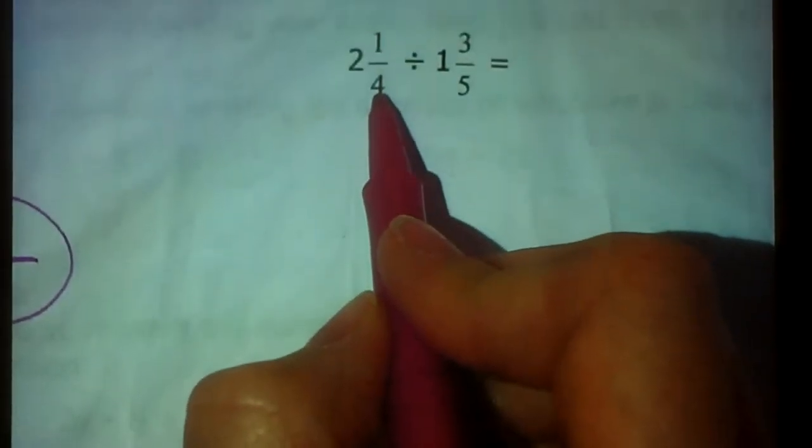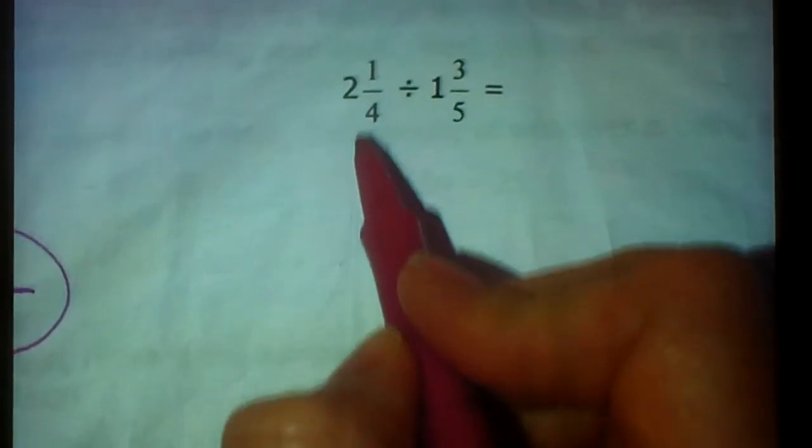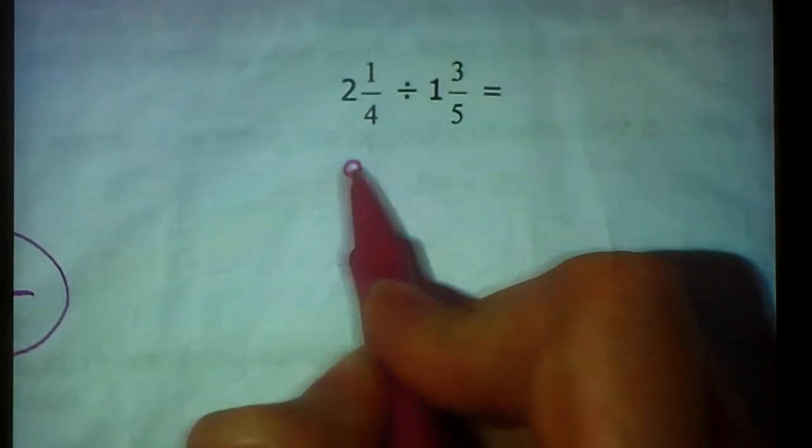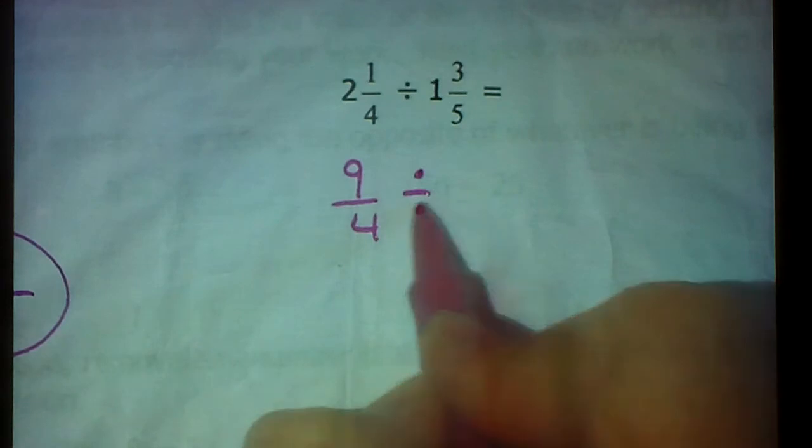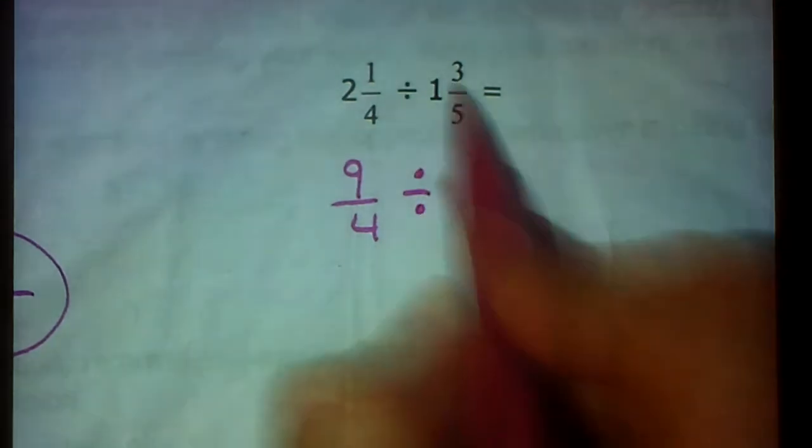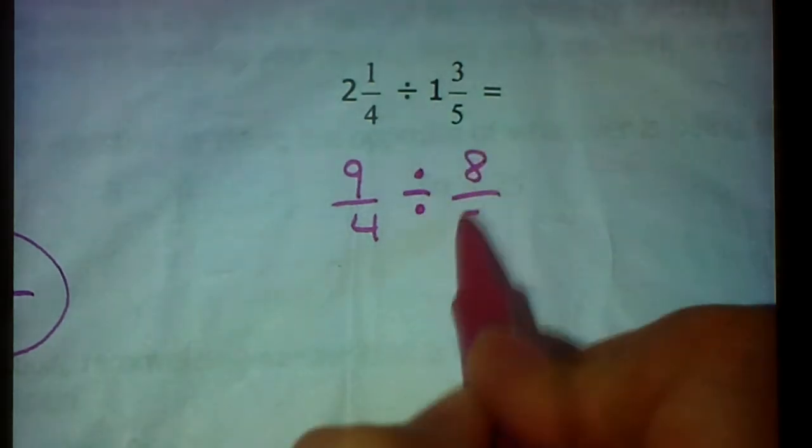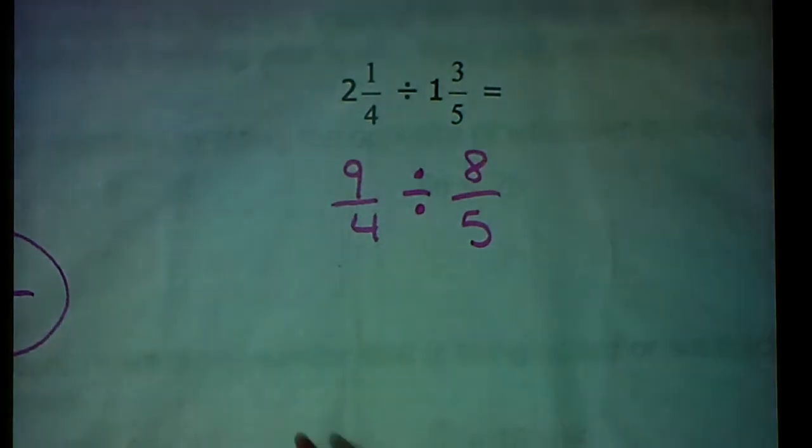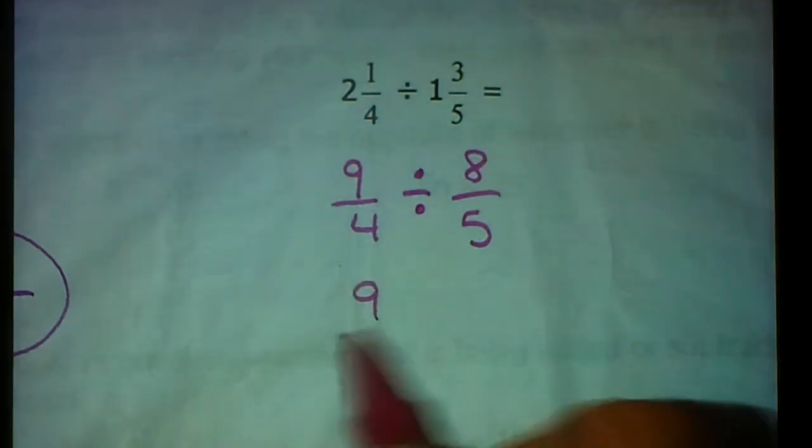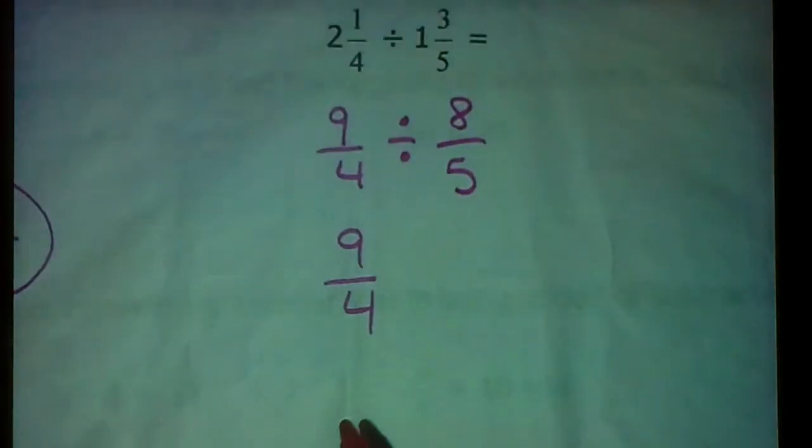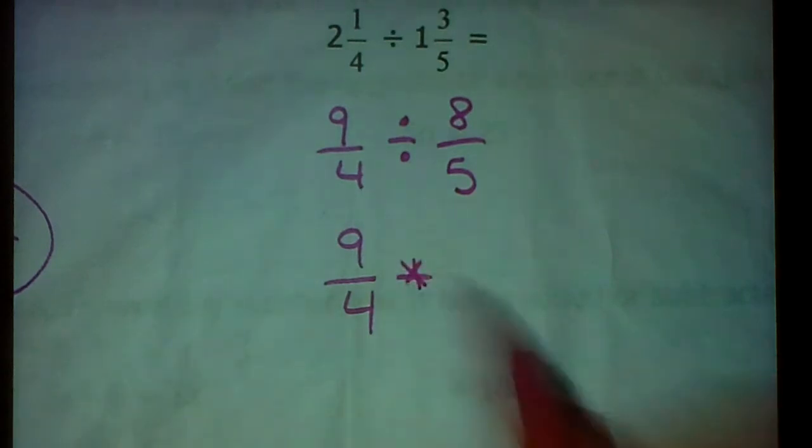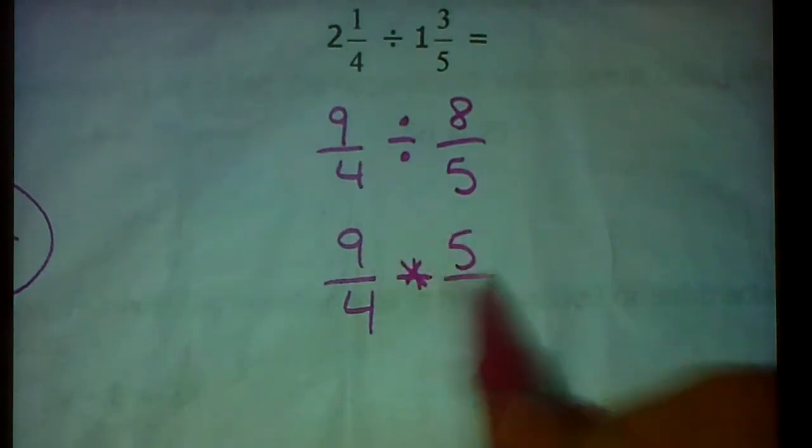Alright, one more like that. First, change these to improper. 4 times 2 is 8. Plus 1 more is 9 fourths. Leave it alone for now. 5 times 1 is 5. Plus 3 more is 8 fifths. Now I'm going to do keep, switch, flip. Keep 9 fourths. Switch to multiplication. Flip to the reciprocal.